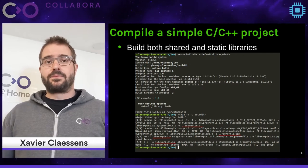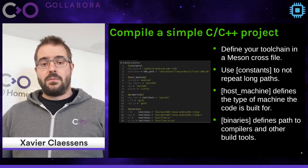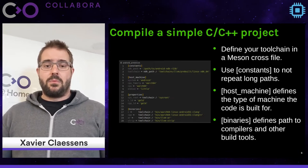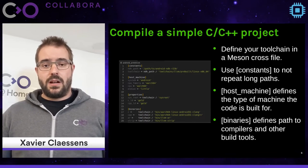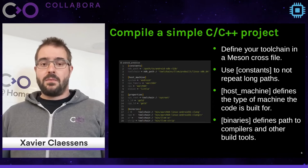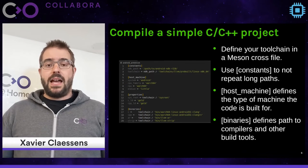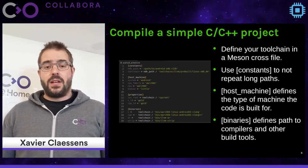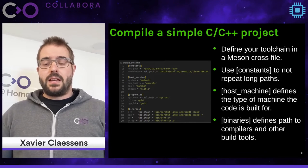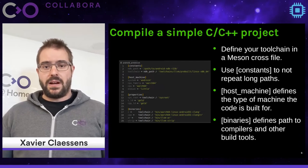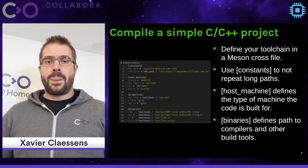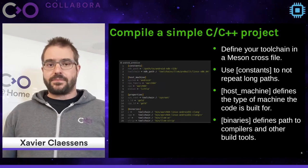To build a project you first configure it by running the meson command with a single argument: the build directory. Meson always does an out-of-source-tree build, meaning it won't create any files inside your source tree — all build files go into the directory you specify. By default it builds shared libraries, but the --default-library option lets you specify shared, static, or both. When building both, Meson optimizes by compiling source files once and linking twice, as long as the C flags are the same.